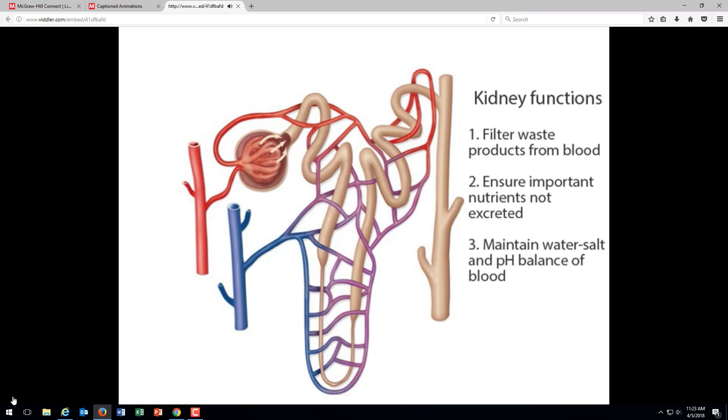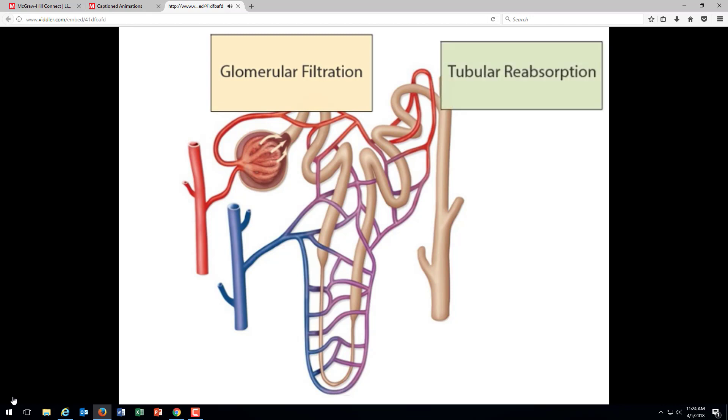In this diagram, we are looking at the structure of a nephron, the functional unit of a kidney. To better understand how a nephron performs these functions, we will divide our discussion into three stages: glomerular filtration, tubular reabsorption, and tubular secretion.